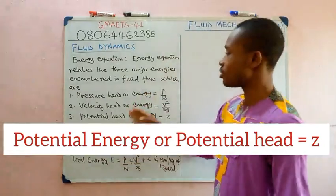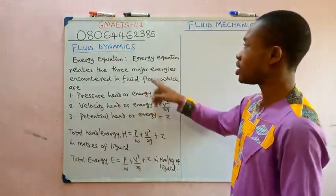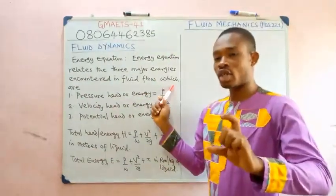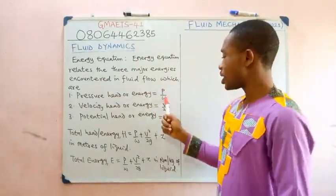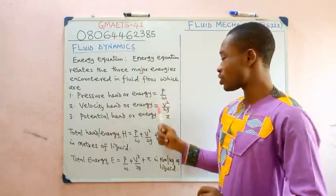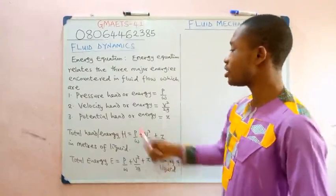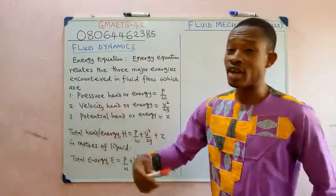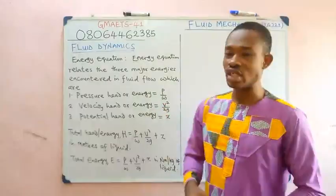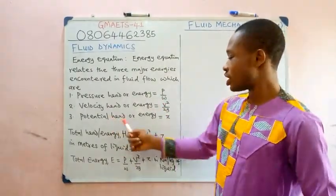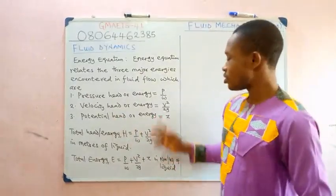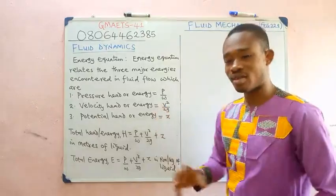Pressure energy is given as P over W, where P is the pressure and W is the specific weight (also equal to ρg). For the velocity head (which also defines kinetic energy), we have V² over 2g. The potential head or energy is equal to Z. Notice there is no mass in these expressions.